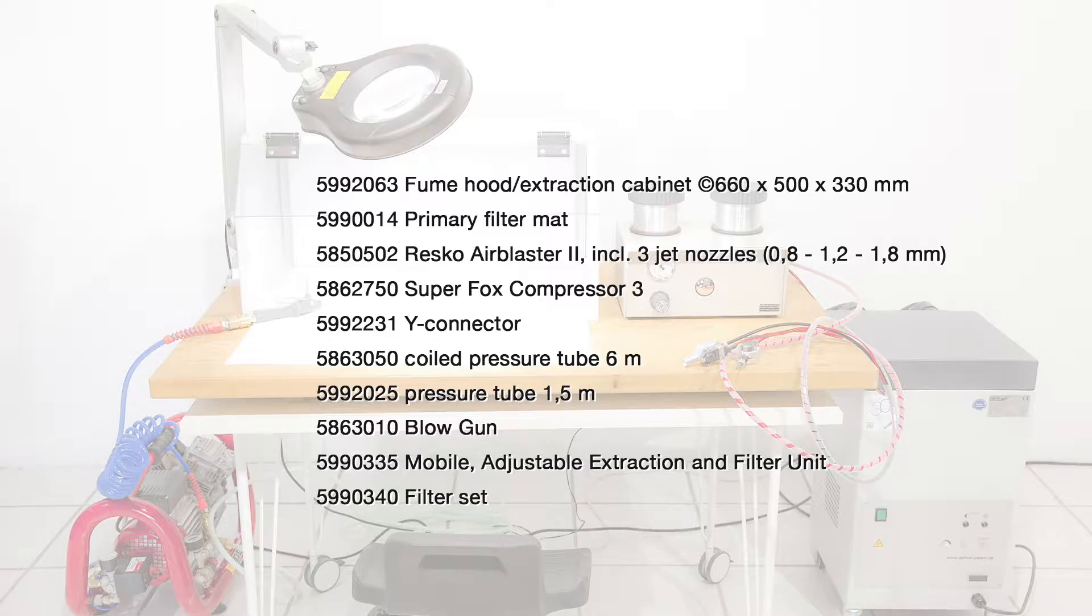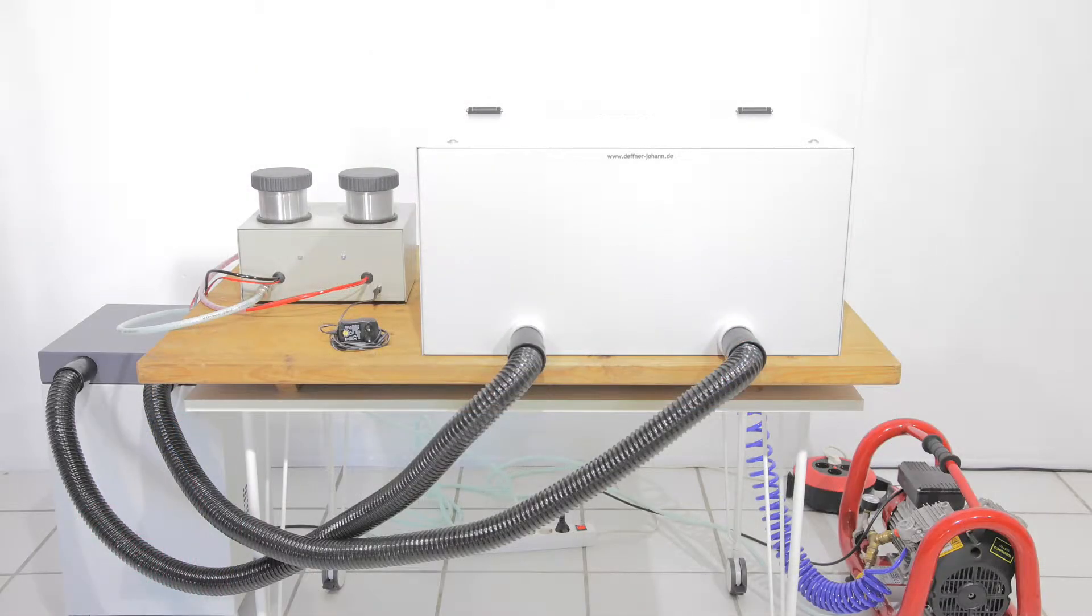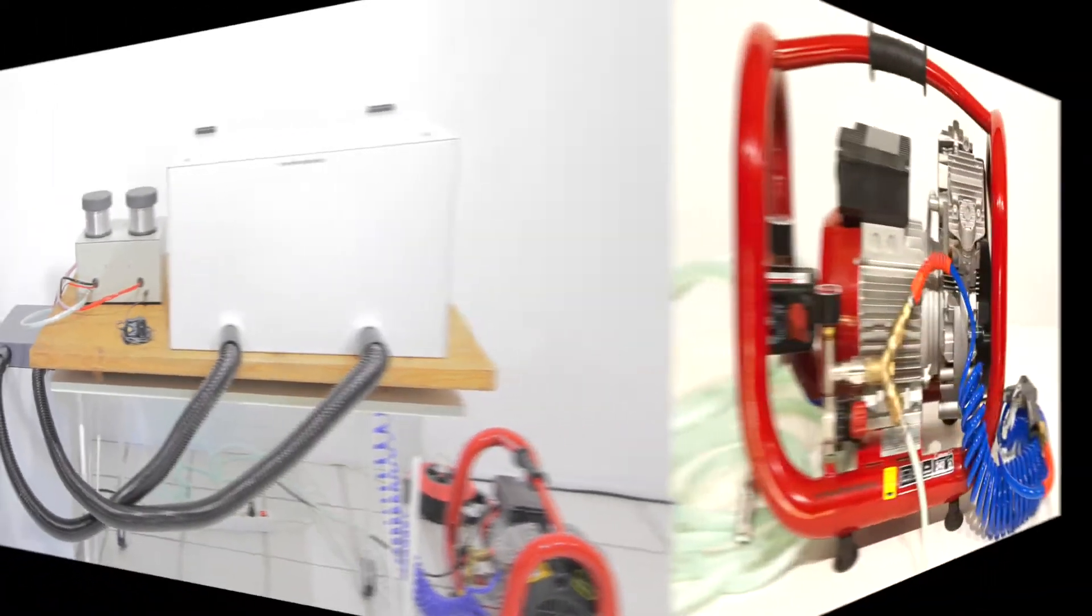Connect the fume hood and extraction unit with the black tubes. Finally, continue with the air blaster by connecting this to the compressor by using the pressure tubes.